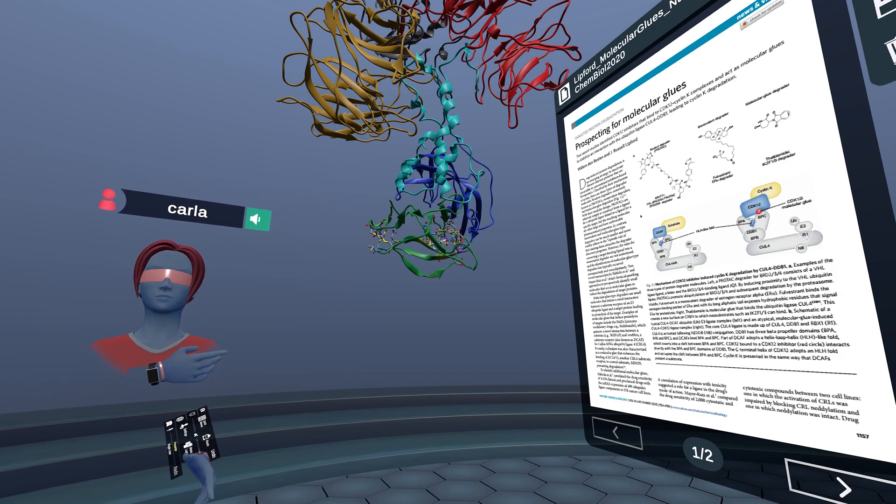Protacs are large molecules, however, and suffer from ADME and drug delivery limitations. By contrast, monovalent degraders and molecular glues are small molecules that exhibit more traditional drug-like properties.